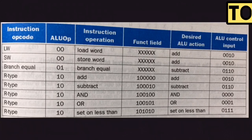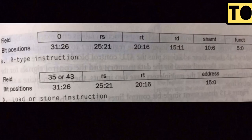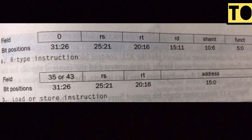If you want to look at the photo display, that is the ALU control input. The value is less than 0 or 31. That is the ALU control input — that is the most important thing.